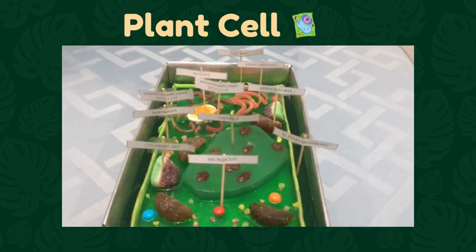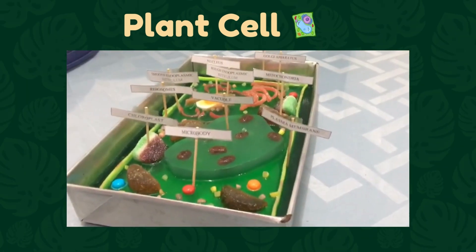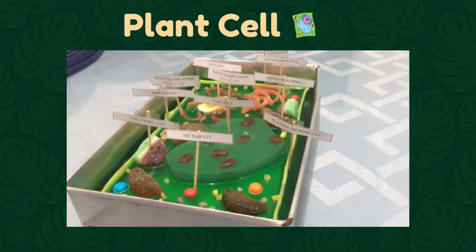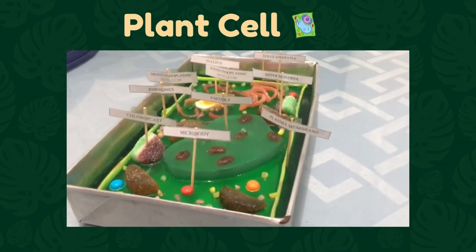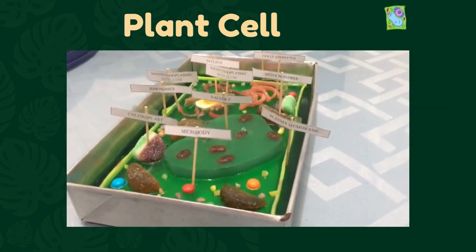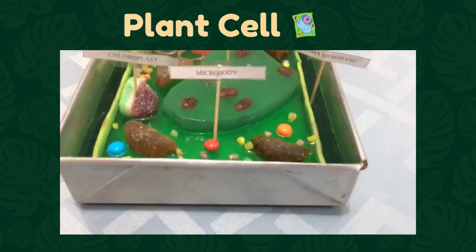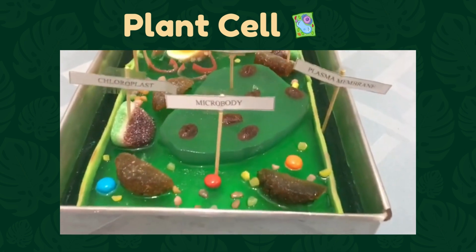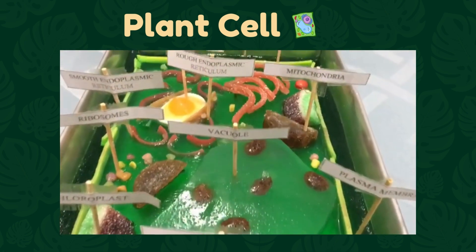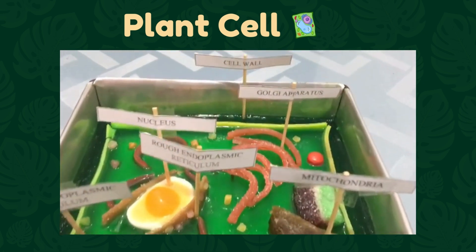Plant cells are commonly found in green plants. They are commonly rectangular in shape and have a cell wall containing cellulose, pectin, and hemicellulose. They also have a large vacuole and chloroplast, which contains a green colored pigment called chlorophyll that is responsible for the photosynthetic processes.